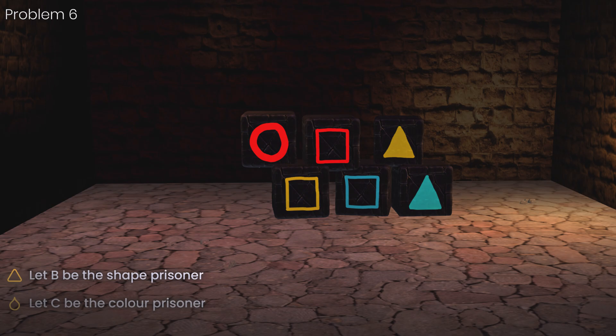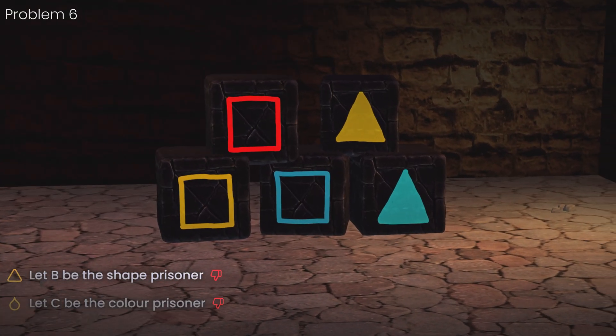Now B can confirm or eliminate the only remaining circle. The same idea applies to C. If all the prisoners say no, then you're certain it's the remaining four squares and triangles.